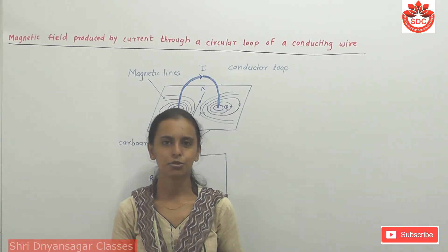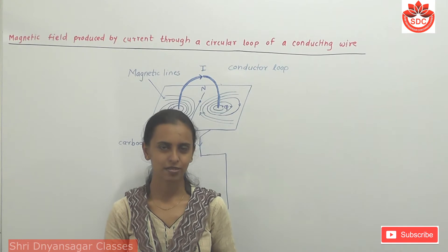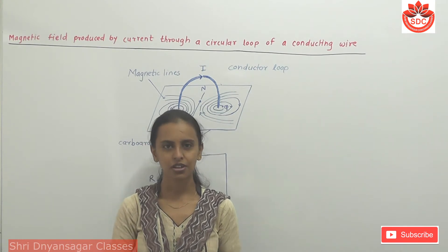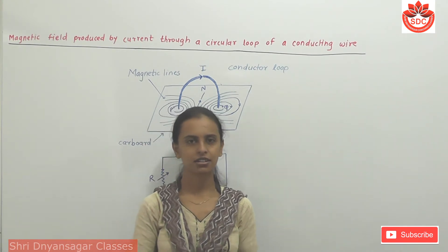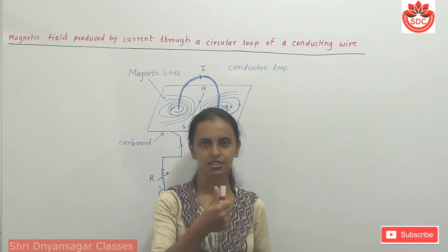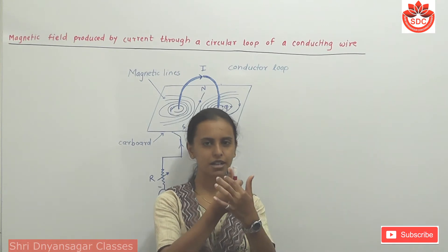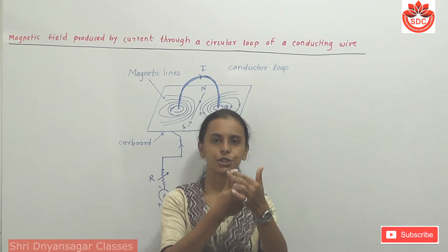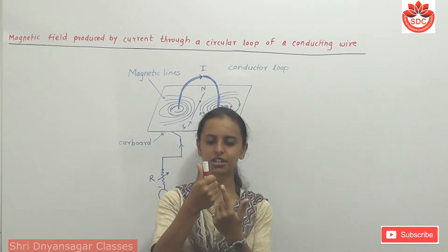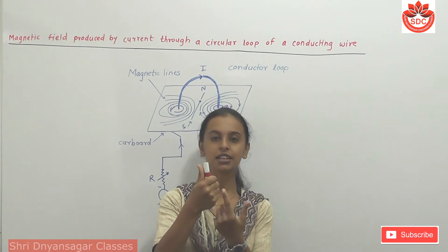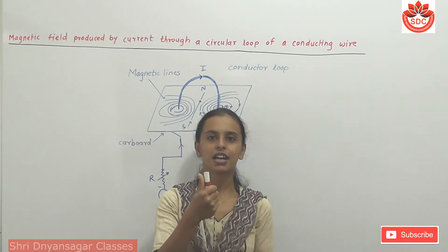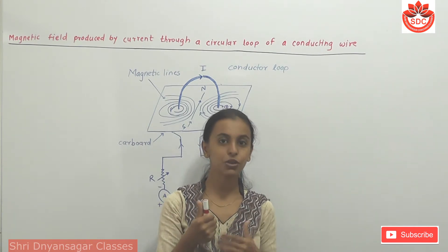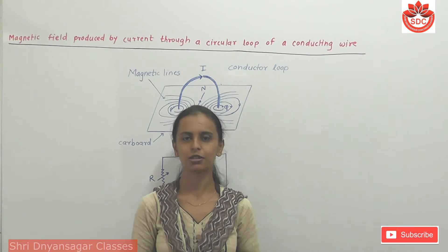First of all, the right hand thumb rule. When a straight current-carrying conductor is held in the right hand, the thumb indicates the direction of the current. The curved fingers indicate the direction of the magnetic lines of force, which is the direction of the magnetic field.